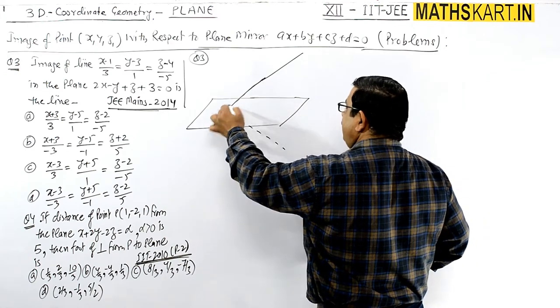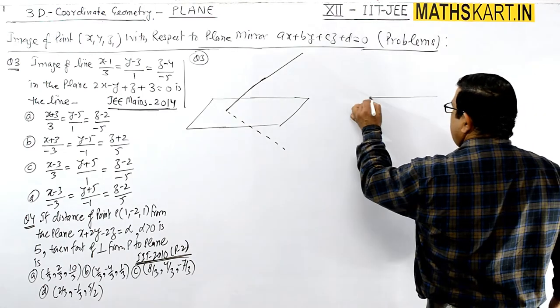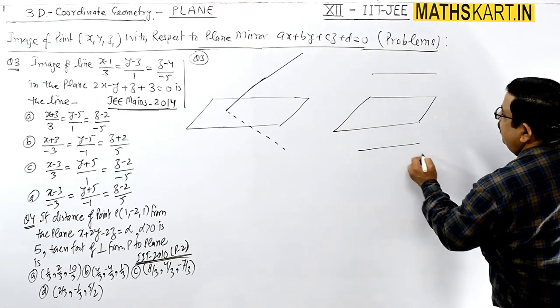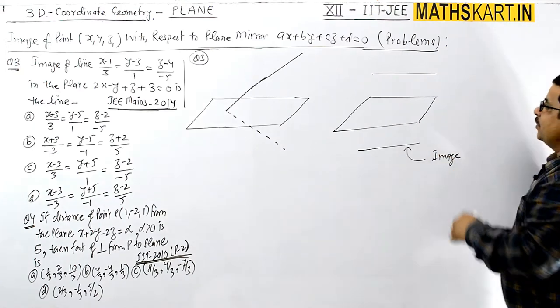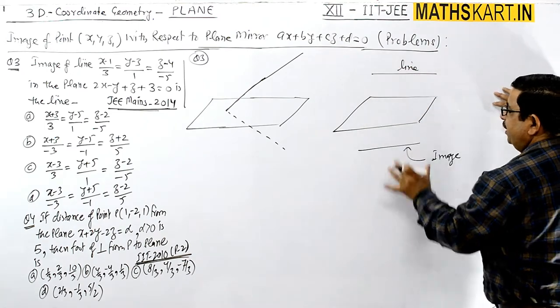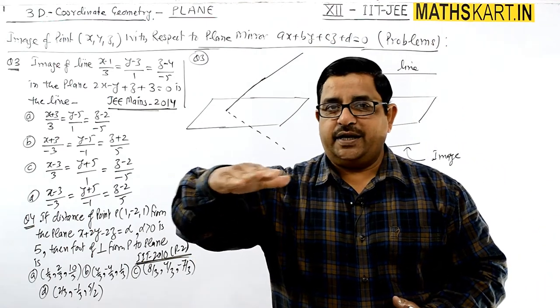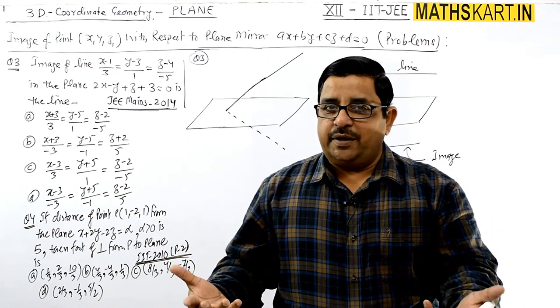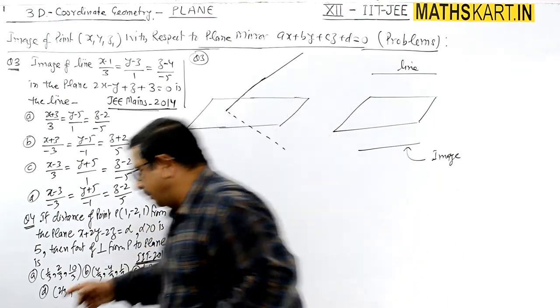This is the line, and against the plane we will get another line. This will be called the image. The entire line has a mirror which is the plane, so against that mirror the image formed will also be a line. Line against line, point against point.